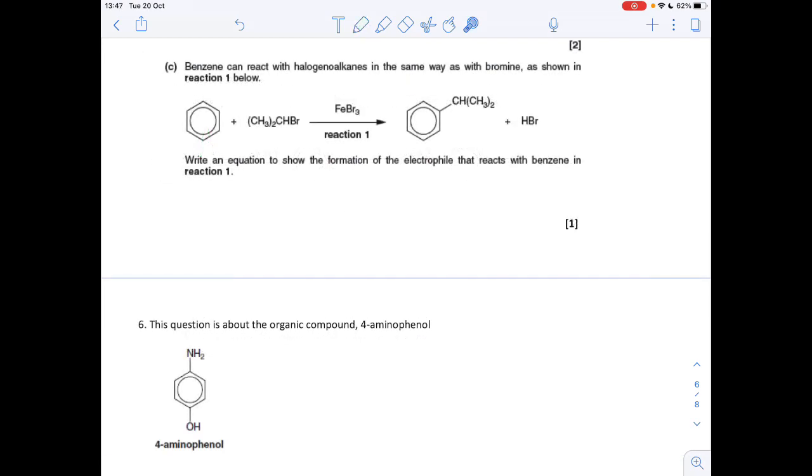Part C, we've got to write the equation to show the formation of the electrophile that reacts with benzene in reaction one. So essentially we need this with a positive charge on it. It's formed from the reaction between the halogenoalkane and the FeBr3 in this case. So it would be CH3 twice, CHBr plus the FeBr3 catalyst. That's going to generate the CH3 twice, CH plus electrophile and an FeBr4 minus ion.